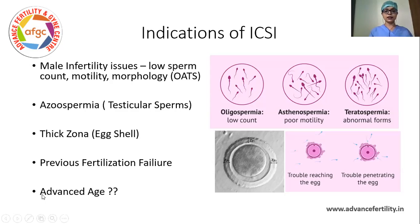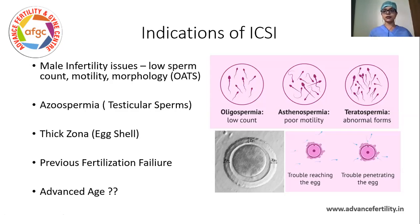Sometimes the egg shell is thick, as you see in the picture here, and in that case we need to use the ICSI method to fertilize the egg. Whether the shell is thick is decided by the scientist. Sometimes when we do a normal IVF cycle the eggs do not fertilize — this is called fertilization failure — and from the next cycle we start using ICSI. Also, women with advanced age sometimes may need ICSI, though not every woman with advanced age requires it; sometimes their egg shells are also thick.